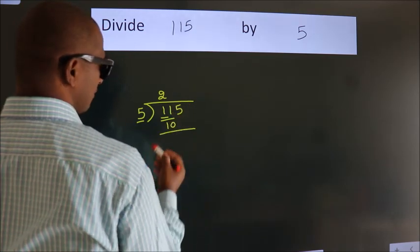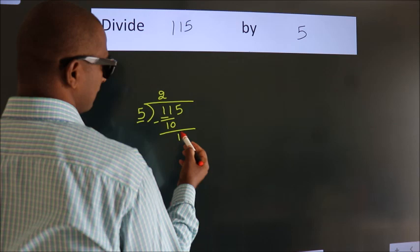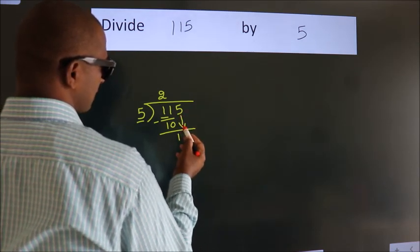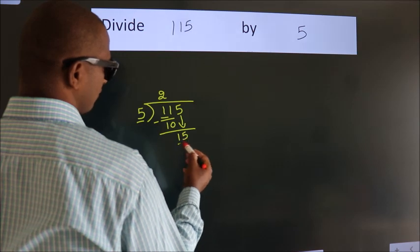Now, we should subtract. We get 1. After this, bring down the beside number. So 5 down, so 15.